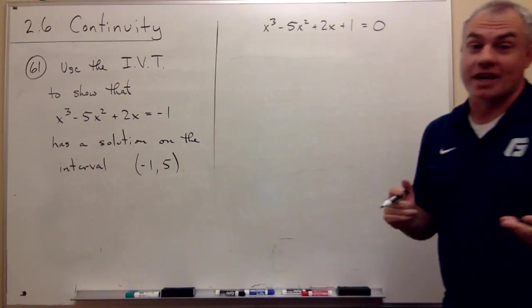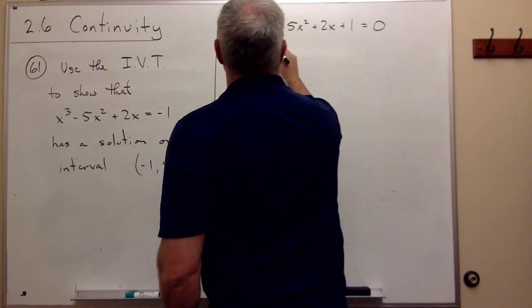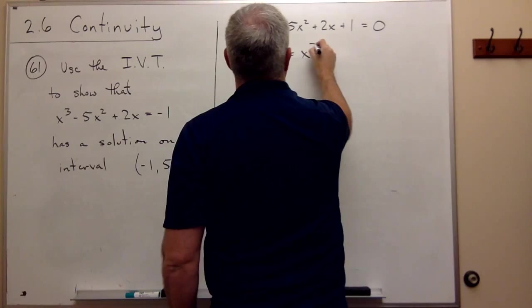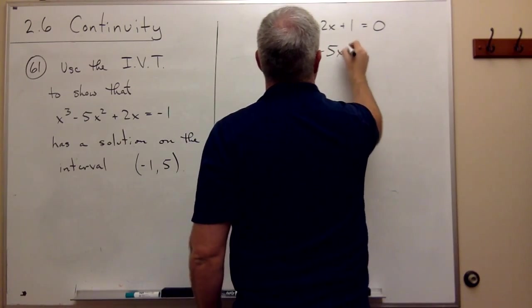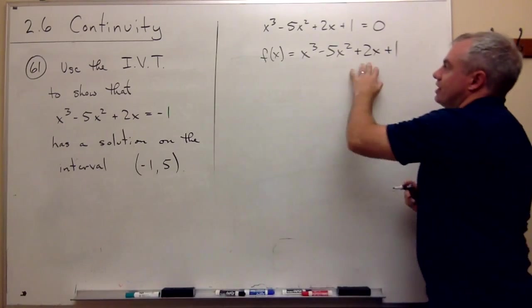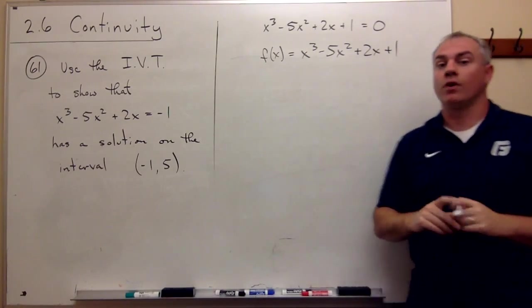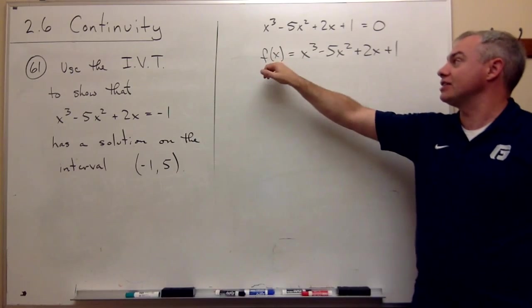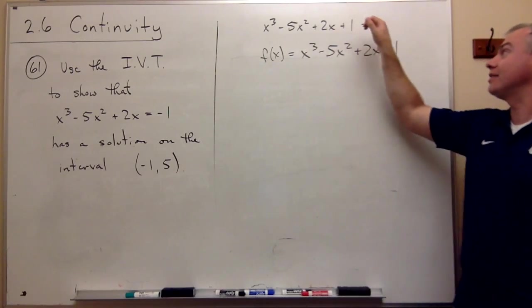There's another way of saying that, and that is let's set up a function f of x that is x cubed minus 5x squared plus 2x plus 1. If this is my function, what I'd like to do is find an x value that if I plug it into the function, I get 0.